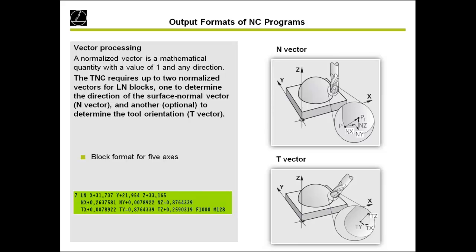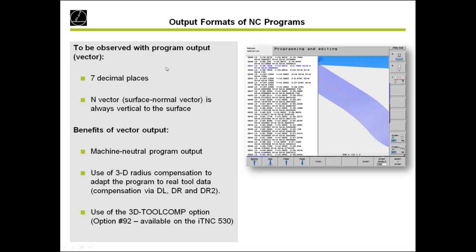If you use the vector program, you can program machine-neutral — you can use the same program on a machine with B-C table, A-C head, or A-head and C-table. You are really free to use the program as a neutral program for 5-axis milling. Also important: you need 7 decimal places for the N and T vectors, and the N vector must always be perpendicular to the surface. This is very important — the N vector must always be perpendicular to the surface of your model.